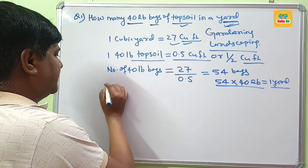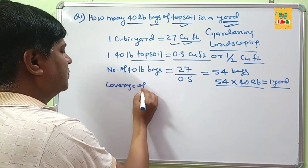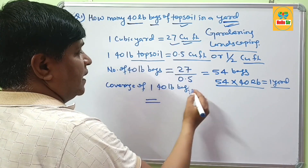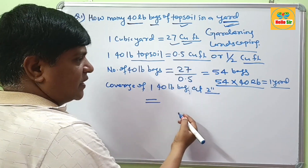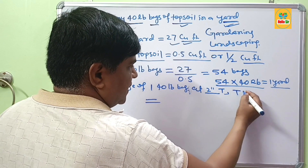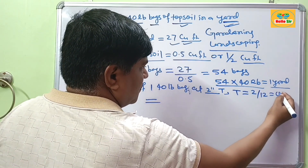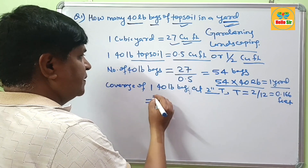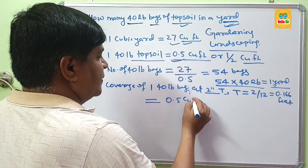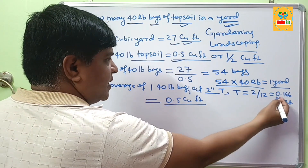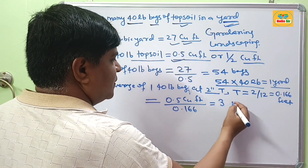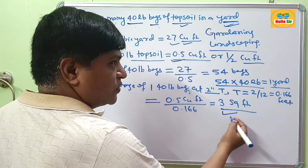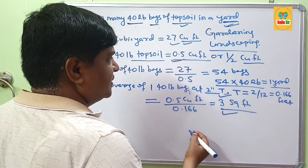If you want to know the coverage of 1 bag of 40 lb topsoil at 2-inch thickness: first convert 2 inches to feet by dividing by 12, which gives 0.166 feet. Then divide the bag's volume of 0.5 cubic feet by the thickness of 0.166 feet. This comes out to about 3 square feet. So 1 bag of 40 lb topsoil covers about 3 square feet at 2-inch thickness.